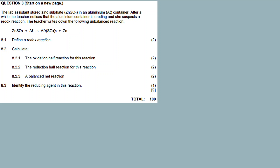Alright, redox reactions — this is our discussion. I believe it's question eight. Question seven is acids and bases, thanks for tuning in. Okay, acids and bases is question seven on the question paper. Question eight is our discussion on redox reactions. I want you to know how to differentiate between the two: acids and bases versus redox reactions.